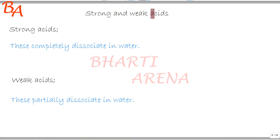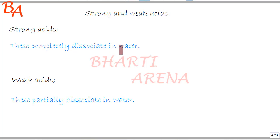Now we will see strong and weak acids. On the basis of the extent of dissociation of acids in their aqueous solutions, these are classified as strong and weak acids. Strong acids completely dissociate in water. For example, nitric acid.